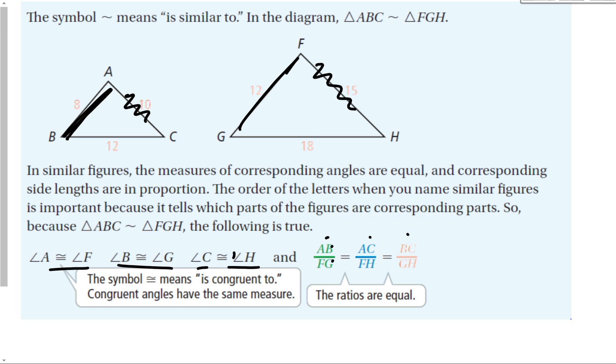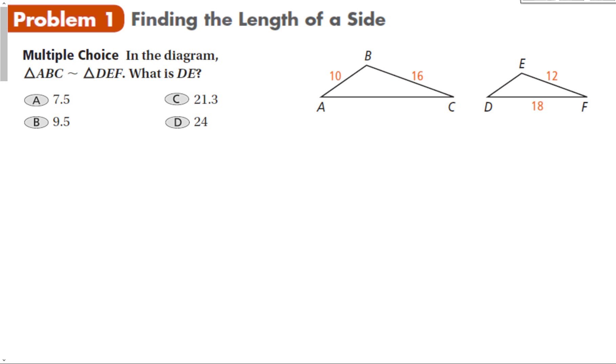Let's take a look at a problem: finding the length of a side. In the diagram, triangle ABC is congruent to DEF. So that goes A, B, C, D, E, F. What is DE? So I want to know this side right here. To start this problem, that's the side I need. That's the side it matches up with. So we can say X over 10 equals... Now this side doesn't help me.